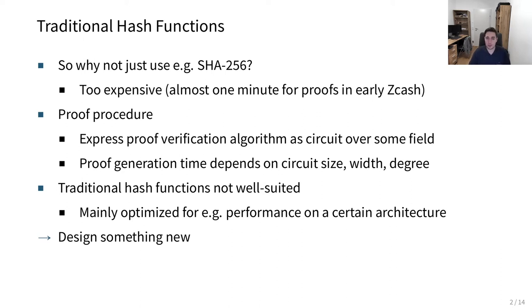We usually try to express the proof verification algorithm as a circuit over some field. Basically, the generation time of the proof depends on the size of the circuit, on the width, and also on the degrees. We can see that traditional hash functions are not very suited for that because they're mainly optimized for different things, for example performance on a certain architecture. The goal and idea of this paper was to basically design something new which is better suited for these use cases here.